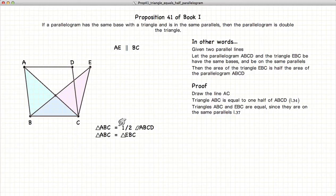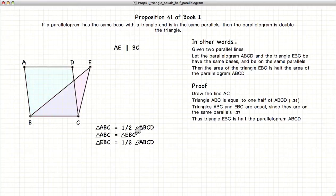So, we have ABC is equal to one-half the area of the parallelogram, and ABC is also equal to the triangle EBC. And from that, we have simply that EBC is equal to one-half of the parallelogram.